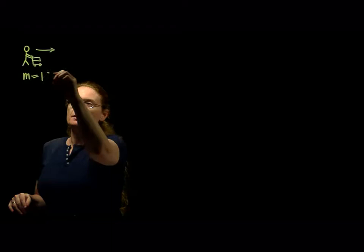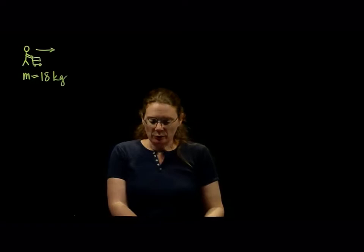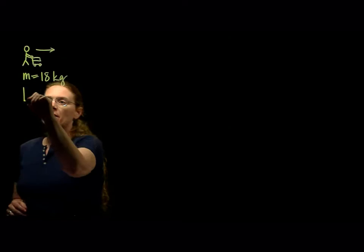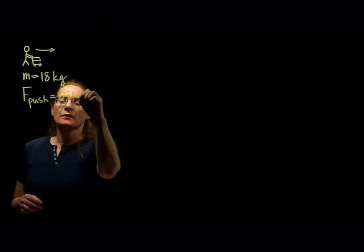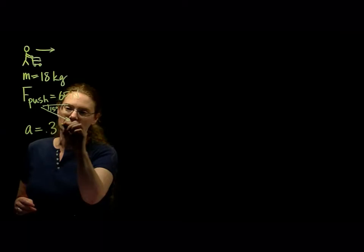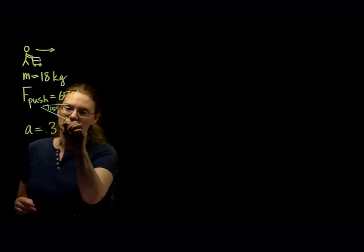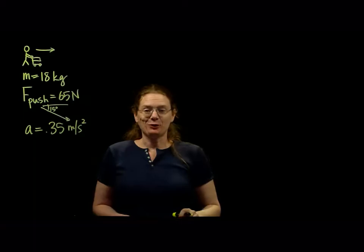It's an 18 kilogram shopping cart, and kilograms means it's a mass — remember, don't confuse mass and weight. You're pushing downward at 65 Newtons at an angle of 15 degrees below the horizontal. So you're pushing with a force of 65 Newtons downward at an angle of 15 degrees. You can accelerate at 0.35 meters per second squared, so your acceleration is 0.35 meters per second squared. That's all we know. So what's our unknown? We are looking for the coefficient of friction.